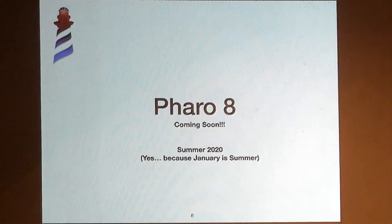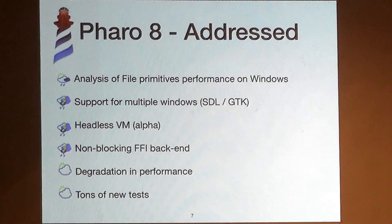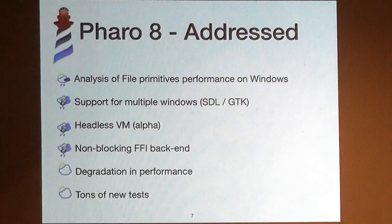As soon as we close the development of one version we start working on the next. For Pharo 8, which we expect to have in the summer of 2020 — around January, because everyone knows January is summer — we have tackled a lot of problems we saw in Pharo 7. We worked a lot on performance in the file system and on some primitives that were degrading performance, especially on Windows with the newest SSD hard drives. We also worked on having non-blocking FFI and are pushing a headless VM.